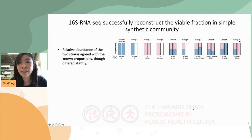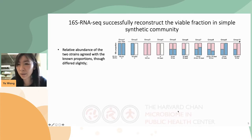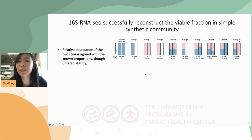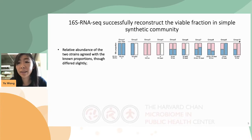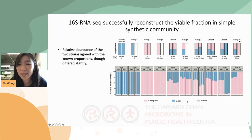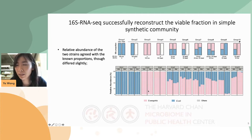We first validated 16S RNA-seq in synthetic communities. We prepared 10 cultures by mixing live and dead E. coli and Streptococcus sanguinis at different ratios, as shown in the demo here. We extracted DNA and RNA in parallel from each culture for downstream sequencing. The sequences from DNA libraries contain signals from the whole microbial communities — live or dead — while the RNA libraries in theory should only represent the viable communities. From the sequencing results, we can see that viability is pretty accurately assessed by 16S RNA-seq in these simple communities.